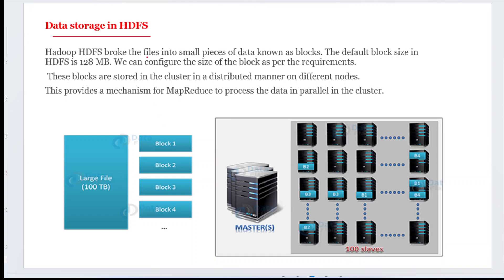Now let's look at data storage in HDFS — this is a very important concept. HDFS breaks files into smaller pieces of data called blocks. The default block size in HDFS is 128 MB. You can extend the block size up to 256 MB, and you can configure the block size as per requirements. All these blocks are stored in the cluster in a distributed manner across different nodes.